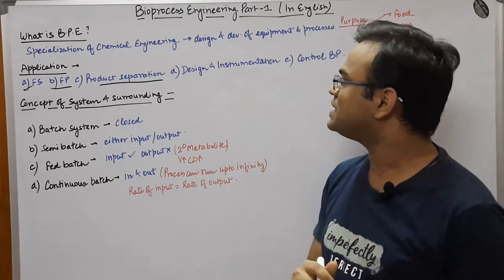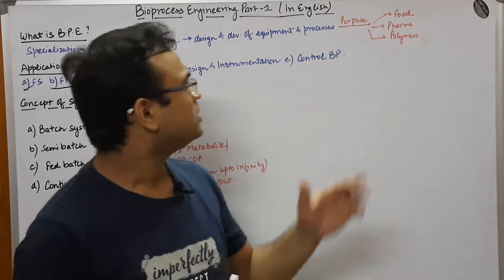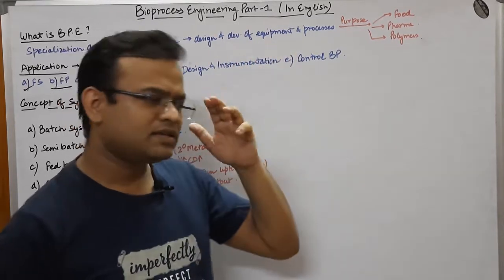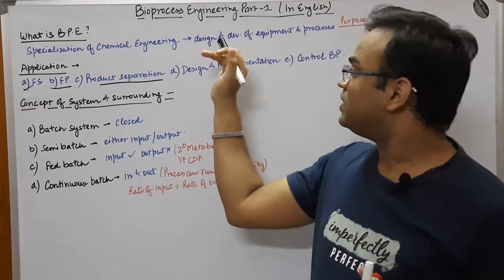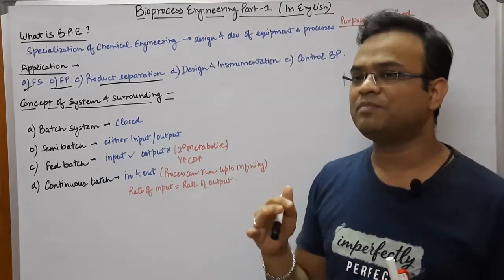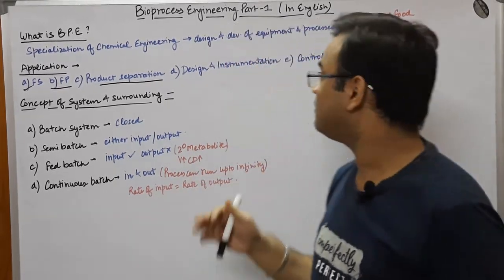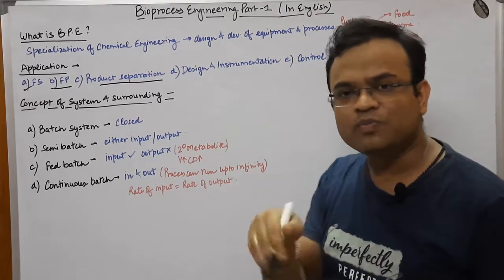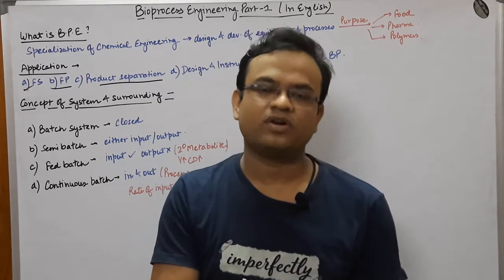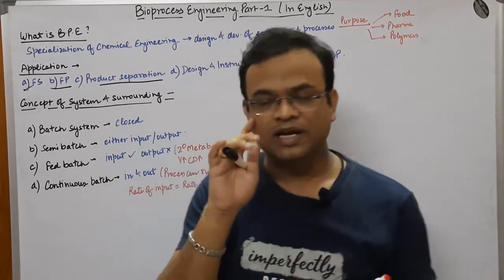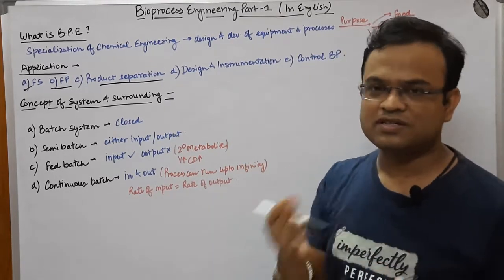Next, let us move on to design and instrumentation. We are utilizing the principles of chemical engineering for designing and developing new equipments or advancing existing ones, and also designing new processes to increase the yield and the product output. Design and instrumentation is the next major application of bioprocess engineering.